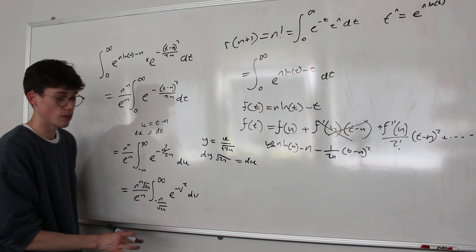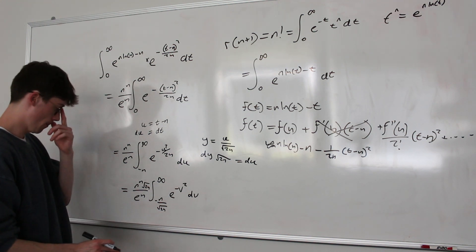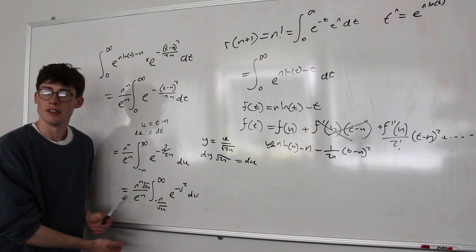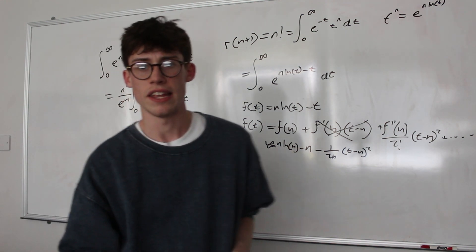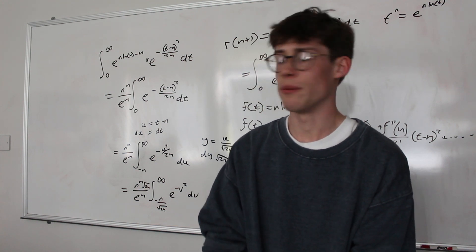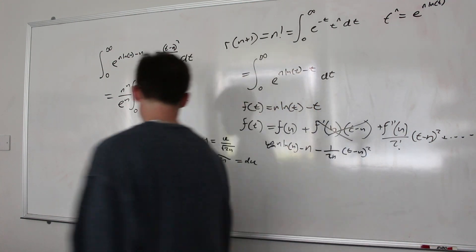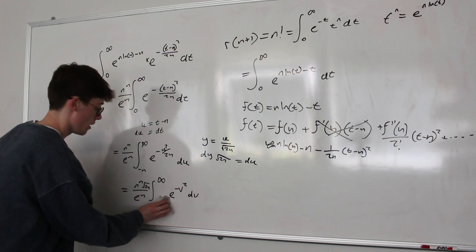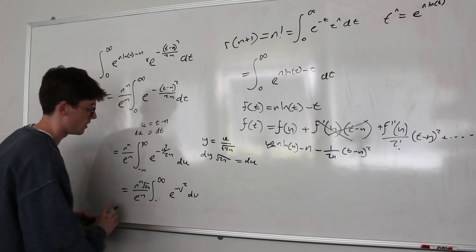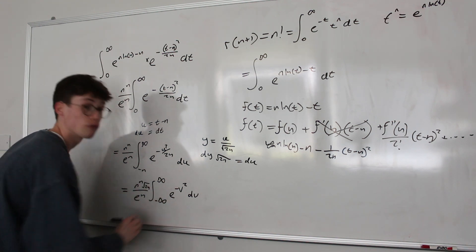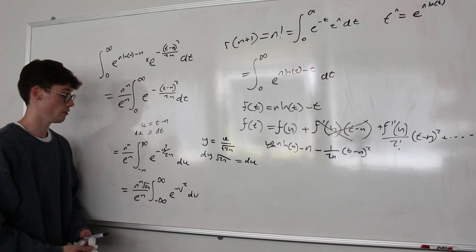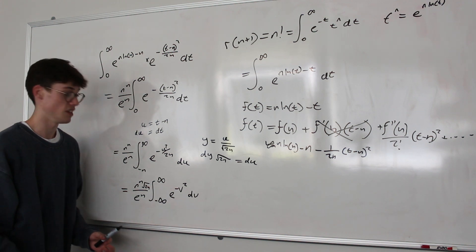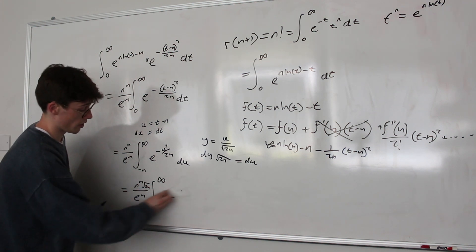Now this bound might be something that's kind of worrying you a little bit. How are we going to deal with this? It's not going to give us something nice, but we've got to remember that we're dealing with large values of n here. And so as we let n approach infinity, we can consider this lower bound as just a negative infinity. And that really neatens things up for us, because now this is a Gaussian integral, and we know what the value of the Gaussian integral between negative infinity and positive infinity is. It's the square root of pi.